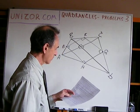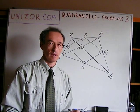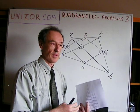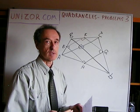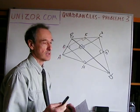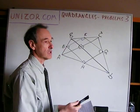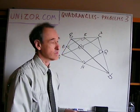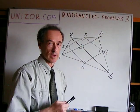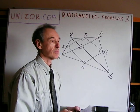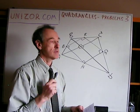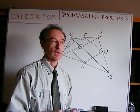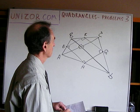Finally, for the midpoint quadrangle to be a square, it must be both a rhombus and a rectangle — equal sides and right angles. Combining the two previous conditions: the diagonals of the original quadrangle must be both congruent in length and perpendicular to each other. That is the sufficient condition for the midpoint-connected quadrangle to be a square.